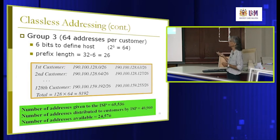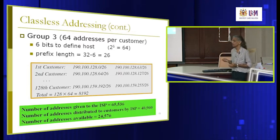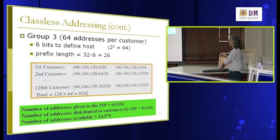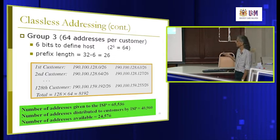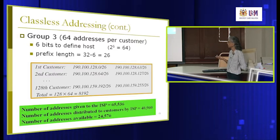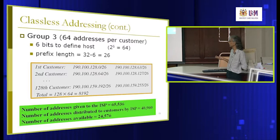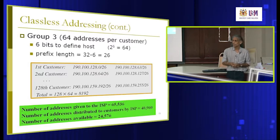The third group requires 64 addresses each, so we only need 6 bits — therefore slash 26. Continuing from address 127.255, we give 64 addresses per customer: 0 to 63, 64 to 127, and so on. Adding up: 16,000 plus 16,000 plus 8,000 equals about 40,000 addresses distributed. The ISP still has a balance of about 24,000+ addresses available for new customers.